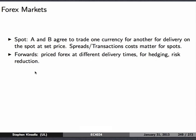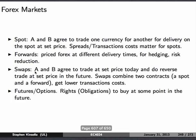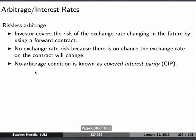In forex markets, there are lots of different ways to look at foreign exchange. The spot market is where parties A and B agree to trade one currency for another for delivery on the spot. Spreads really matter — the transaction costs. Forward markets really matter, where you price forex at different deliveries for hedging. Swaps are where you set the price today but swap back in the future. And then there are futures and options — there are many other ways to do it as well.